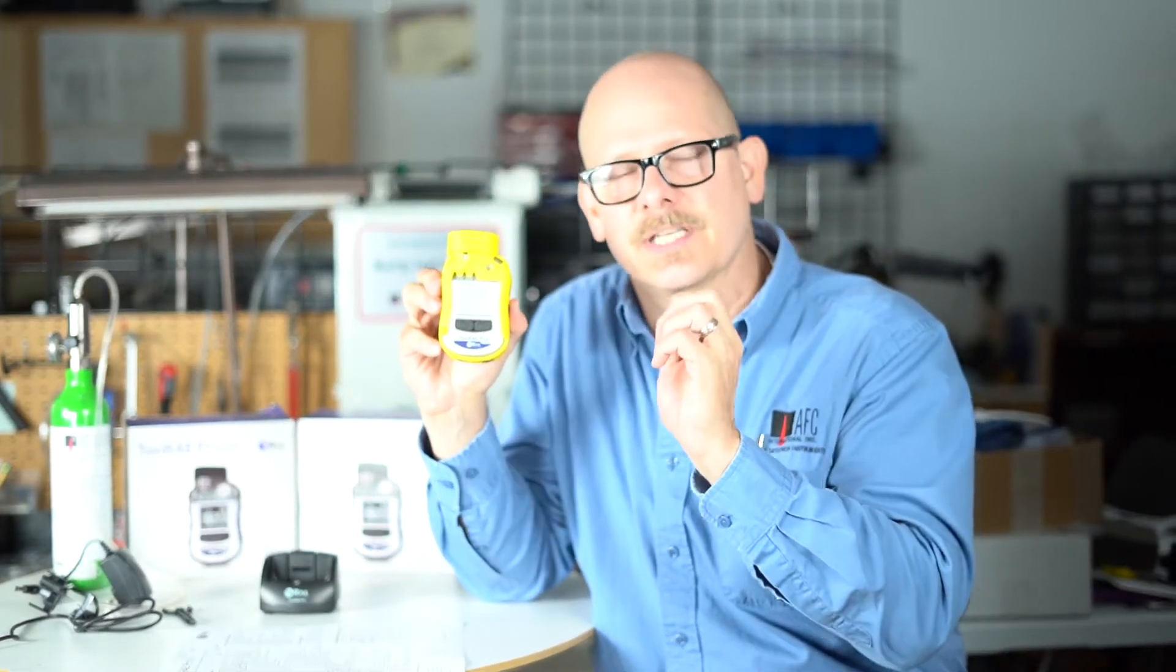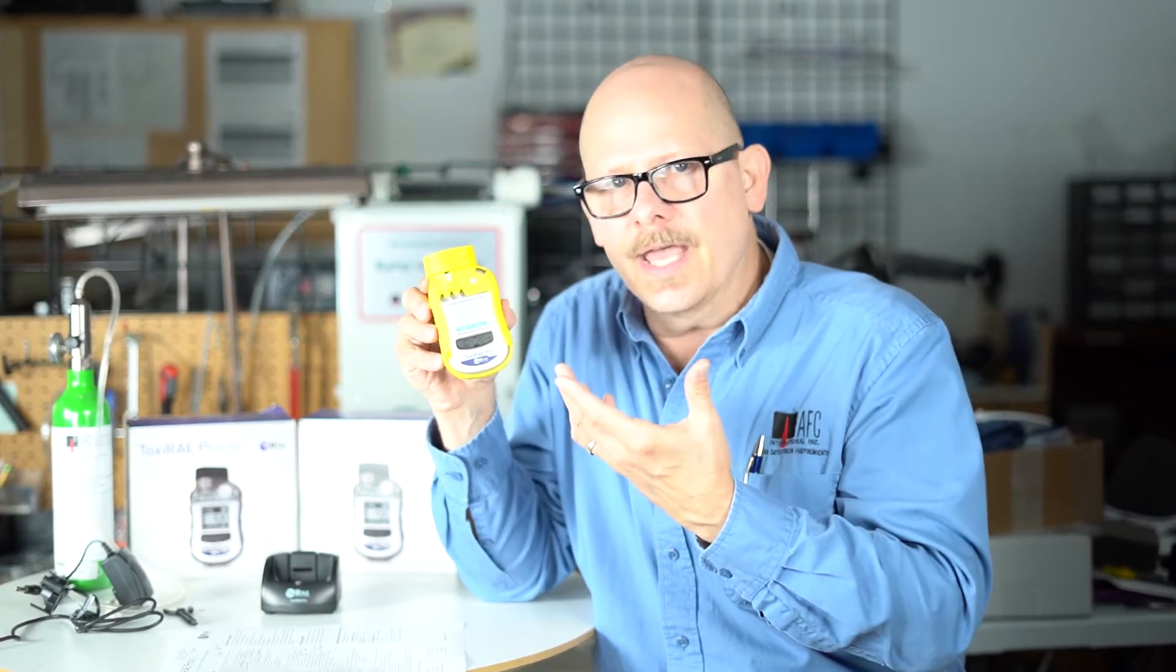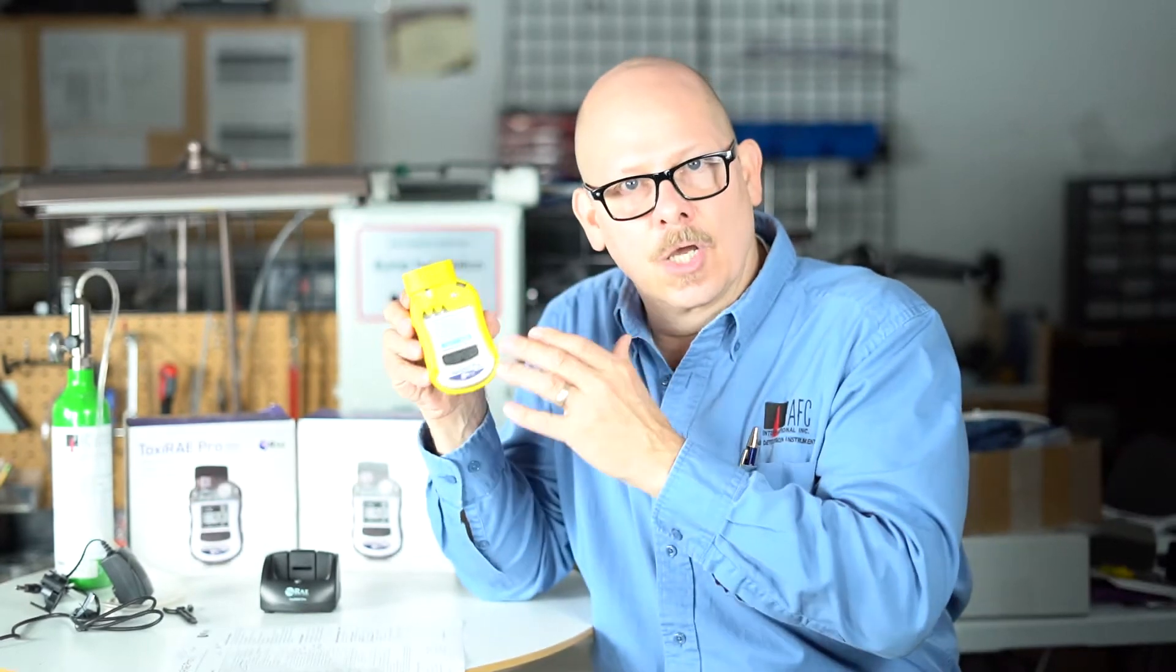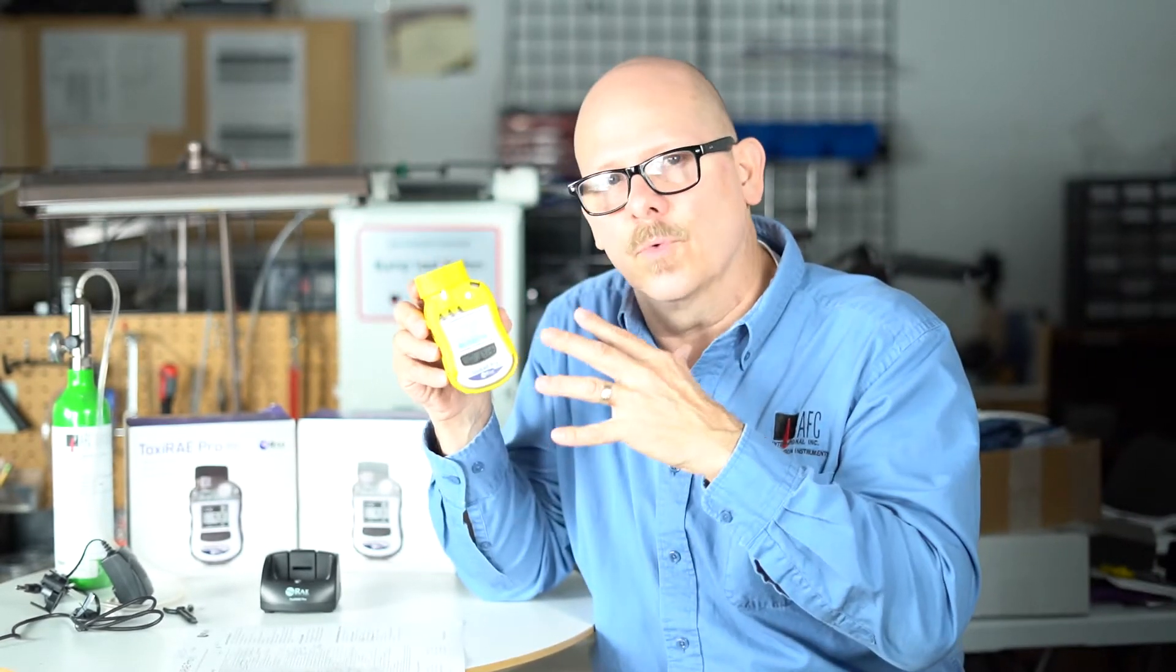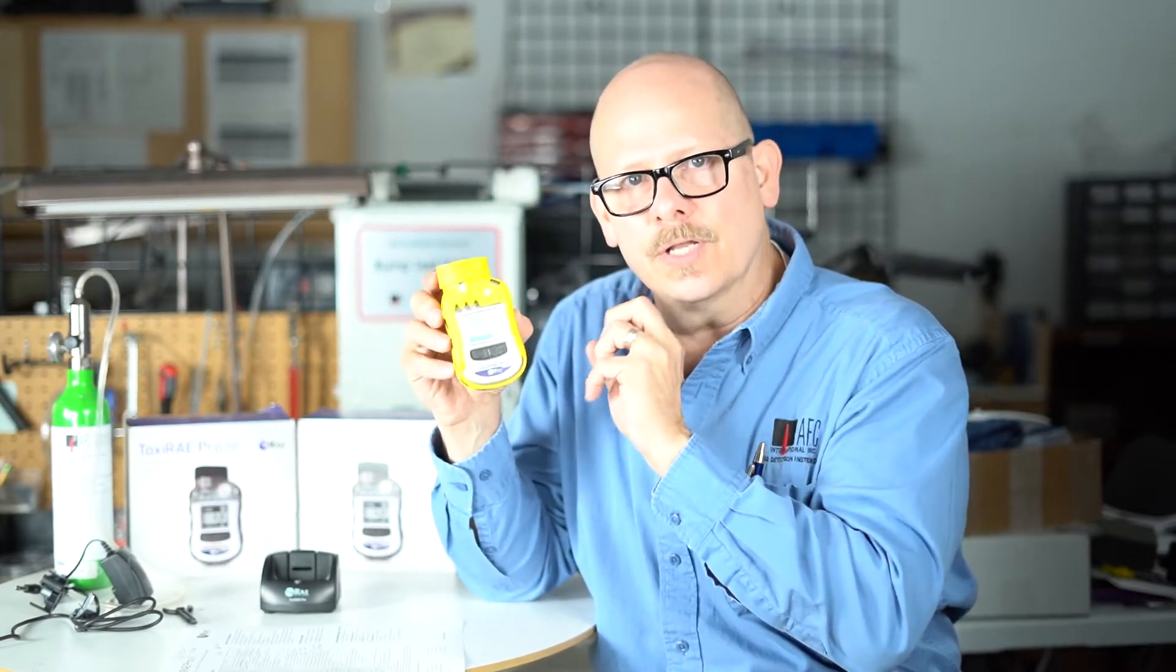The other thing you will see, it also has a time-weighted average alarm, so you can set it up for the OSHA or NIOSH or ACGIH time-weighted average PEL, and let it go off an alarm when you've reached and exceeded that. It has a light, a flash, and a vibrator alarm, so you can hear it in high noise and see it in high noise conditions.